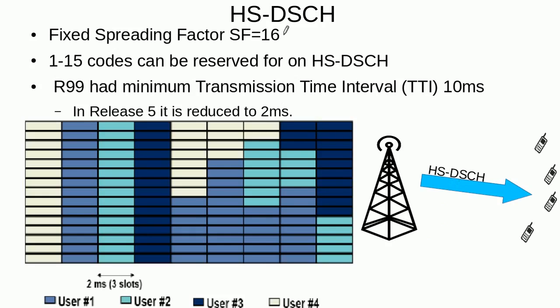When the high speed downlink shared channel is mapped onto a physical channel, that physical channel has a fixed spreading factor of 16. We know that if the spreading factor is lower, the data rate is higher, so a spreading factor of 16 means this channel has a high data rate. The purpose of this channel is to take advantage of good channel conditions.